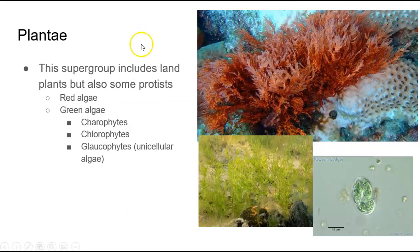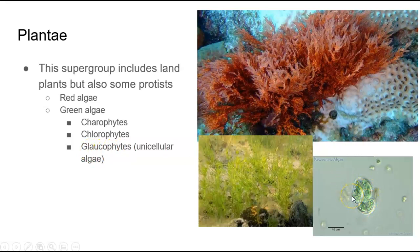The next supergroup is plantae. Of course this includes plants, however some protists are also found in this supergroup, including red algae, green algae — which can be multicellular or unicellular — and glaucophytes, which is a unicellular algae.